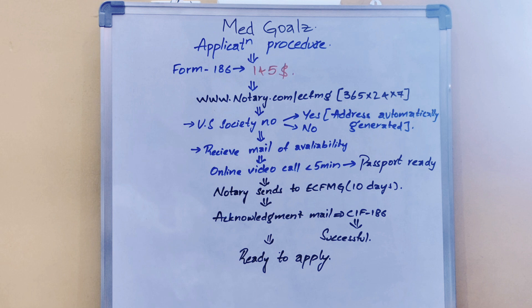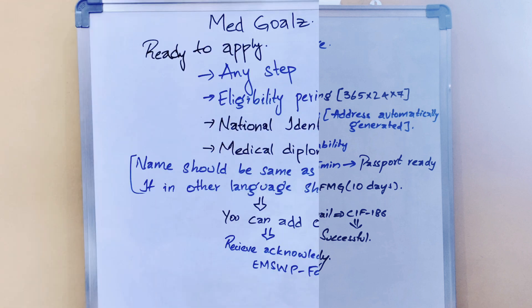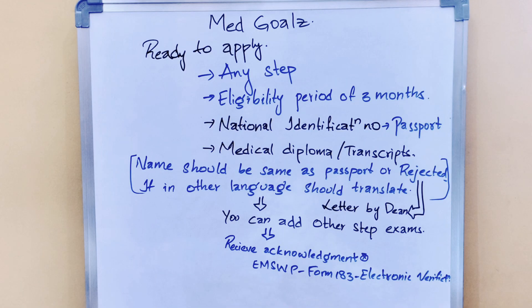You will then receive an acknowledgement email that Form 186, the Certificate of Identification, is successful and you are ready to apply. You can then take any step — Step 1, Step 2, anything you wish. The eligibility period here is 3 months. The next thing to be careful about is the national identification number — you should keep your passport ready.